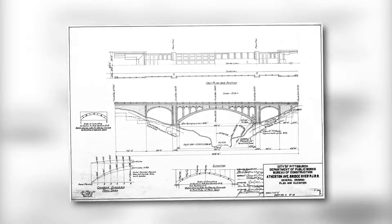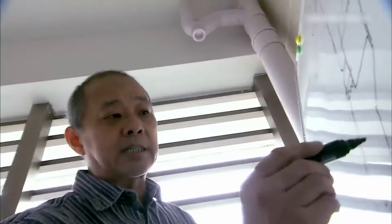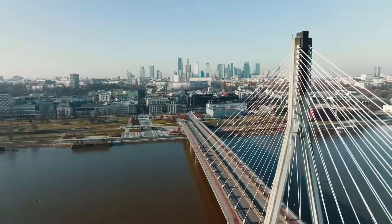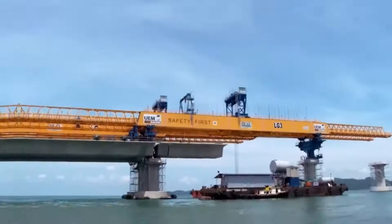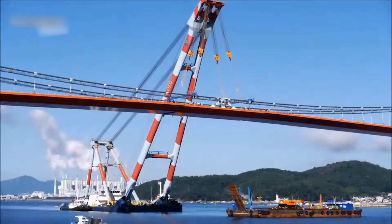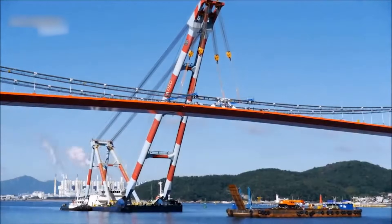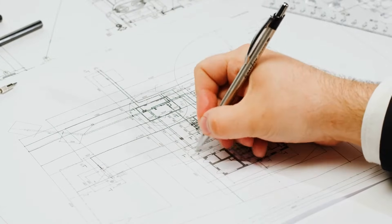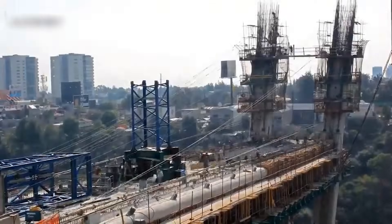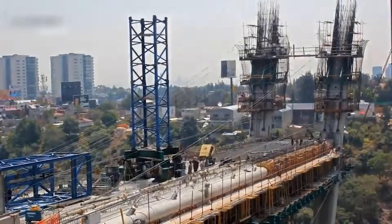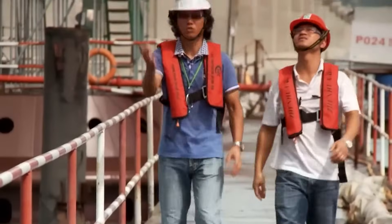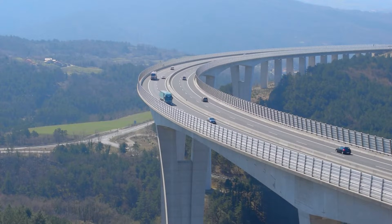In addition to the design of the bridge itself, designers must also consider the impact that the bridge will have on the surrounding environment. For example, a bridge that spans a river or other body of water may require environmental impact studies to ensure that the bridge will not harm local wildlife or disrupt the ecosystem. Overall, the design process for a bridge is a crucial step in ensuring that the finished product is safe, efficient and functional. It requires a deep understanding of engineering principles and careful attention to detail to ensure that the bridge can withstand the stresses of daily use and stand the test of time.